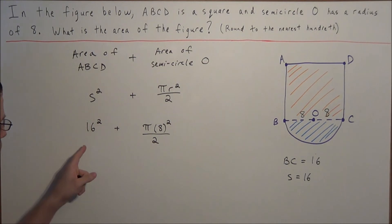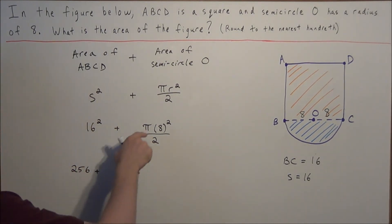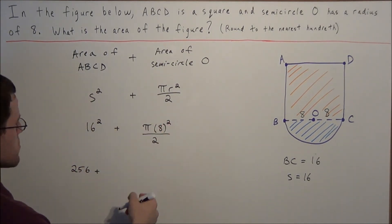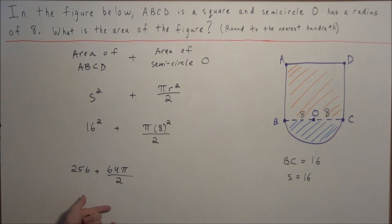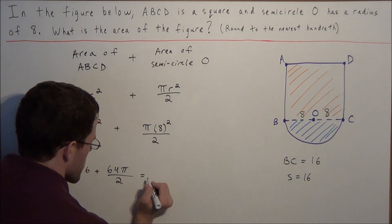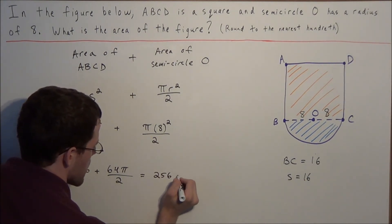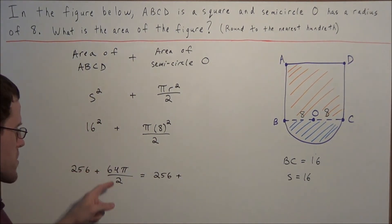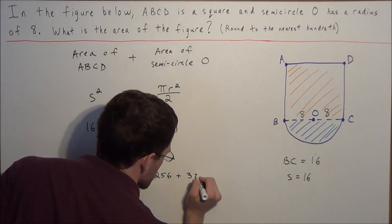So now for the next line we simplify. We have 16 squared is equal to 256, and now we're adding 8 squared is equal to 64. So we have 64 pi divided by 2. Now we can simplify a little bit more. We have, for the next line, 256 plus, and now 64 divided by 2 is 32. So we have 256 plus 32 pi.